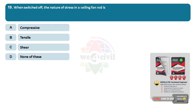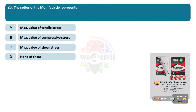Question 19: When switched off, the nature of stress in a ceiling fan rod is? Options: A, compressive. B, tensile. C, shear. D, none of these. Answer is Option B, tensile. Question 20: The radius of Mohr's circle represents? Options: A, maximum value of tensile stress. Option B, maximum value of compressive stress. Option C, maximum value of shear stress. Option D, none of these. Answer: Option C, maximum value of shear stress.